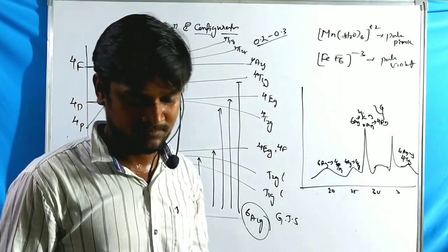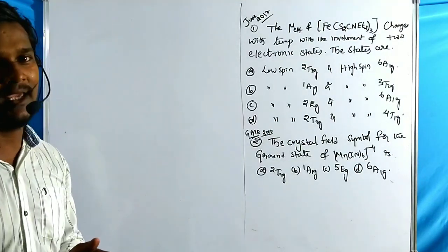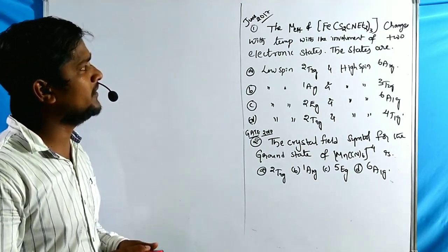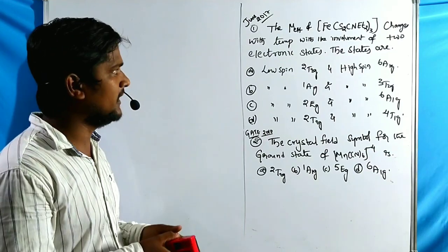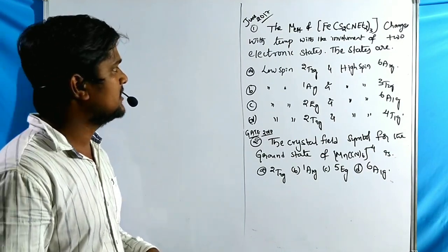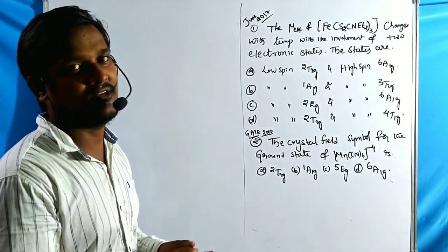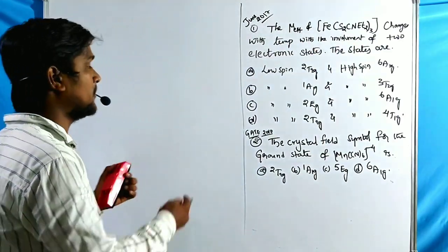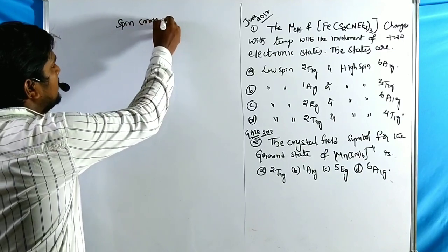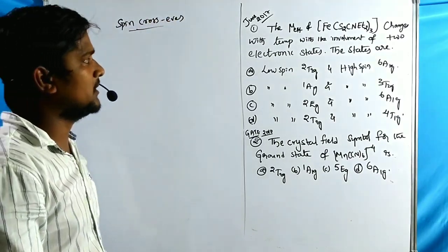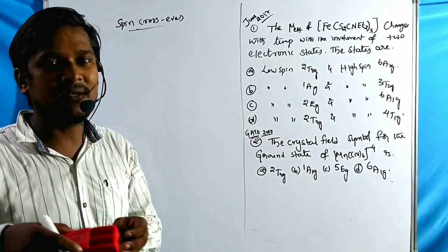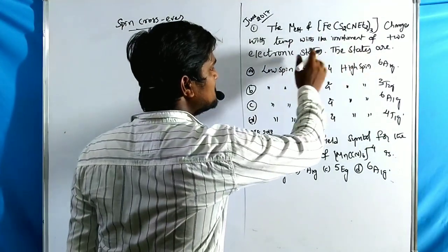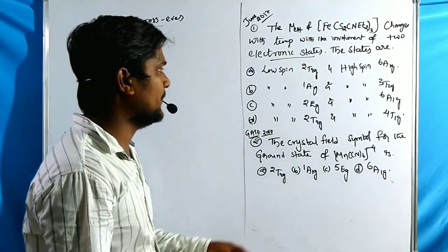Now let us solve some previous year problems on d⁵ configuration. The first question is from 2017: the effective magnetic moment of Fe(S₂CNEt₂)₃ changes with temperature with the involvement of two electronic transitions. Since μeff changes with temperature, this is a spin crossover point — at low temperature it acts as a low spin complex, and at high temperature it acts as a high spin complex.